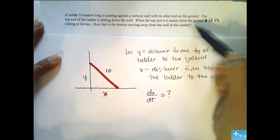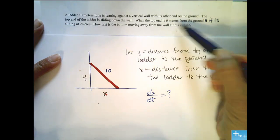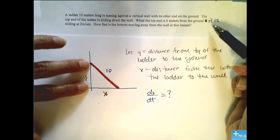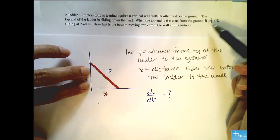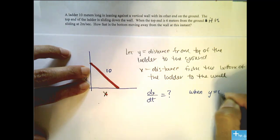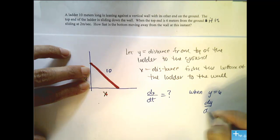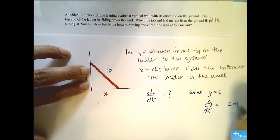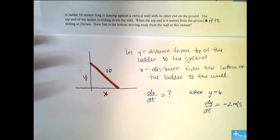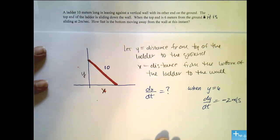Alright, now what are we given? When the top is 6 meters from the ground, it is sliding at 2 meters per second. Which means this distance is changing at 2 meters per second when y is 6. So let's write what we know. When y equals 6, dy/dt equals 2 meters per second. And since it's getting smaller, we represent this idea with a negative.